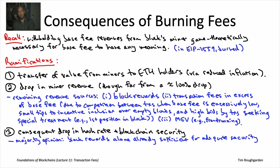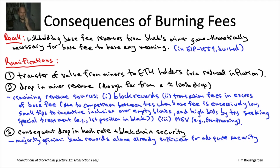That wraps up everything about transaction fees in general and EIP-1559 in particular. Next, in lecture 12, we'll have our third lecture in this four-lecture series on the economics of blockchains and functionality enabled by having a native currency. We'll focus on a really major and important topic: proof-of-stake blockchains — an alternative Sybil resistance mechanism to proof-of-work that uses radically less energy consumption and looks to be extremely important going forward.